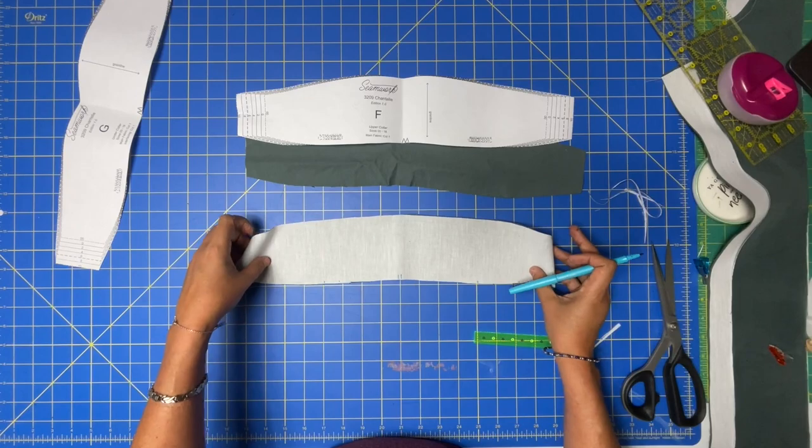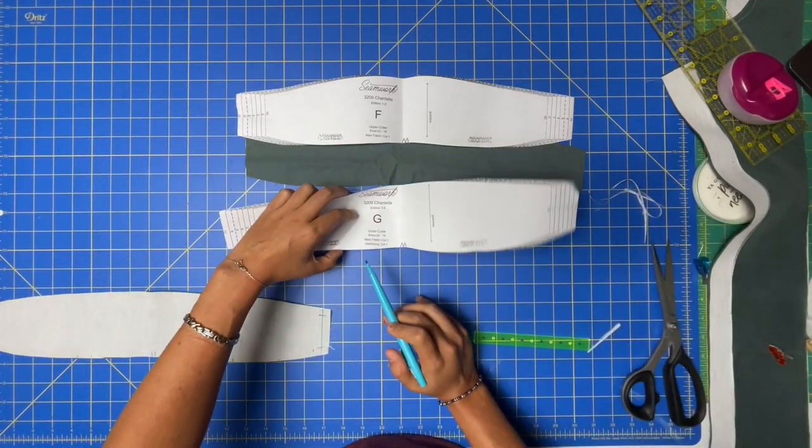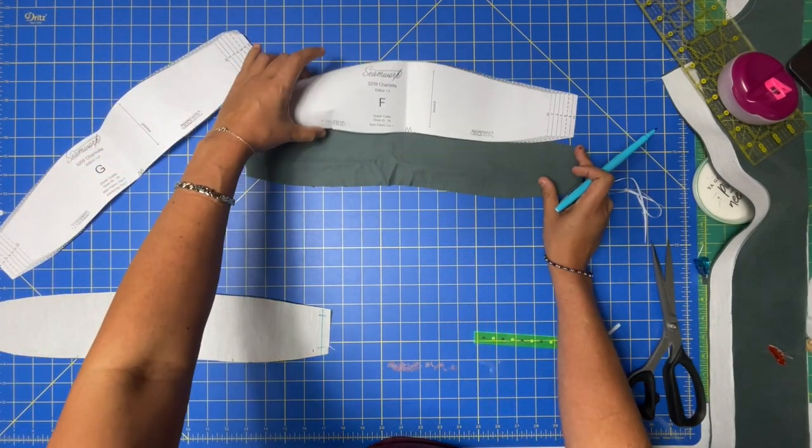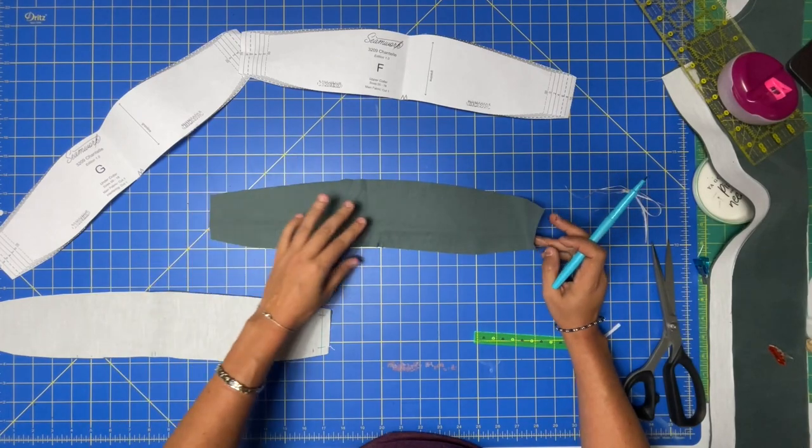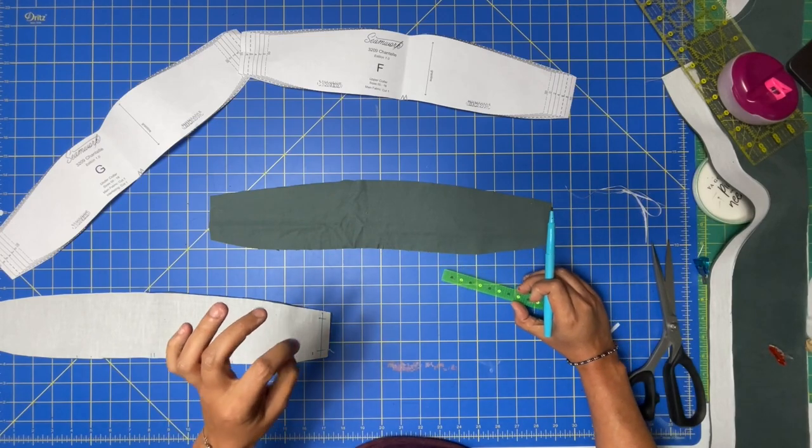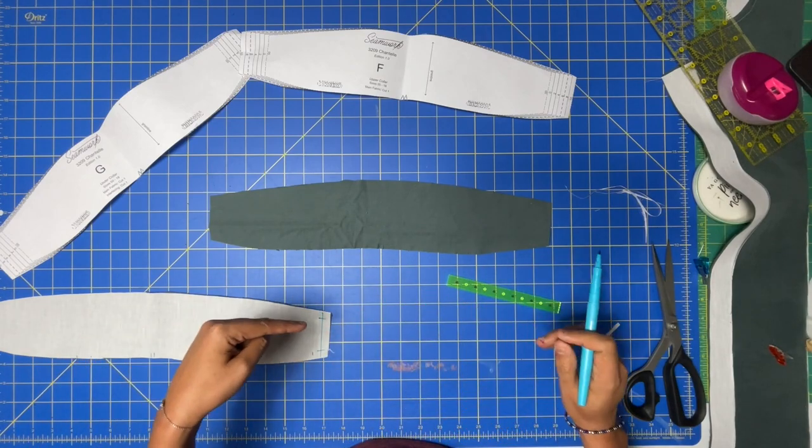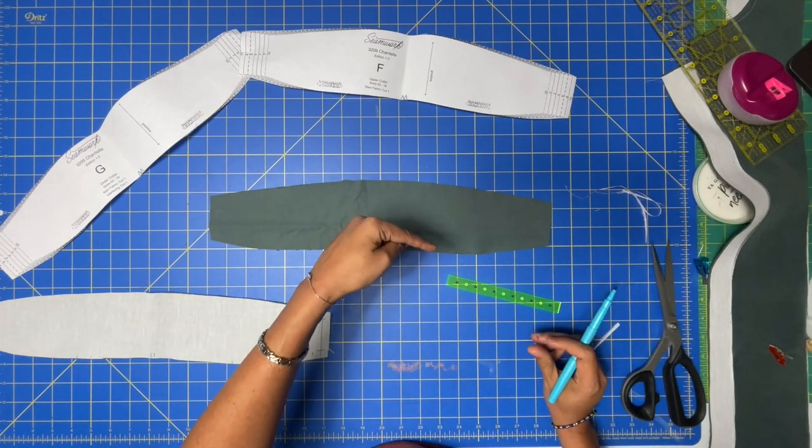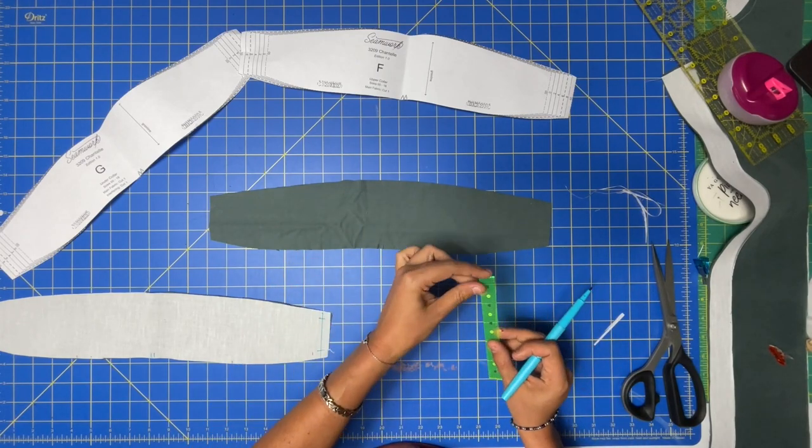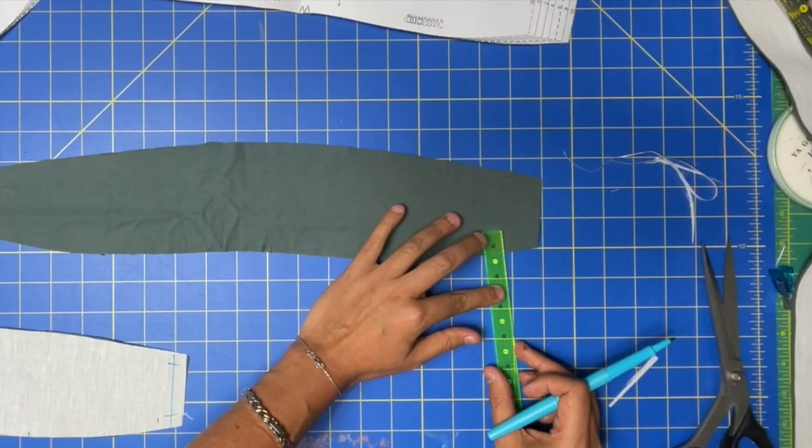Now F is the uninterfaced one. You see how G has main and interfacing, and F does not—it only has main fabric. F is the one that is going to get turned up by three-eighths of an inch along this bottom edge so that it can get sewn to the dress. Anytime I'm turning up something and pressing it, I double the amount that needs to be turned up. So three-eighths times two is six-eighths, which is also three-quarters.